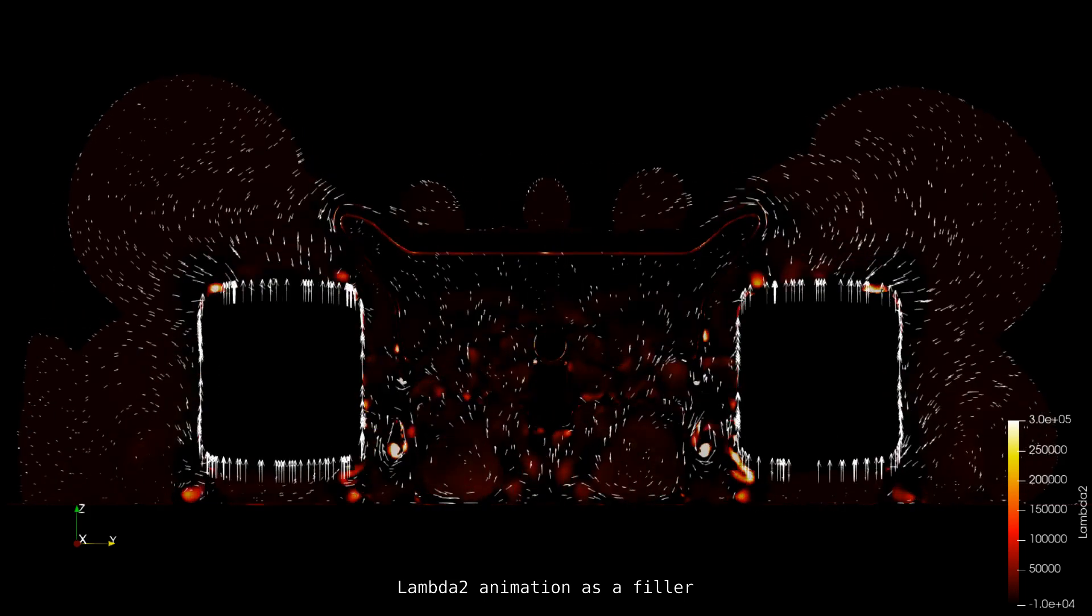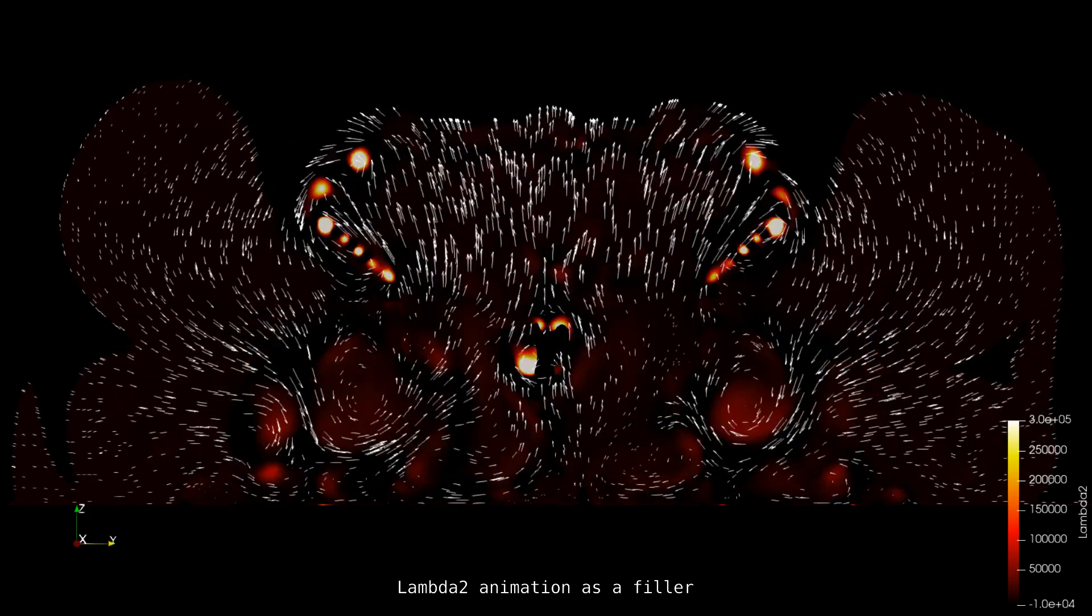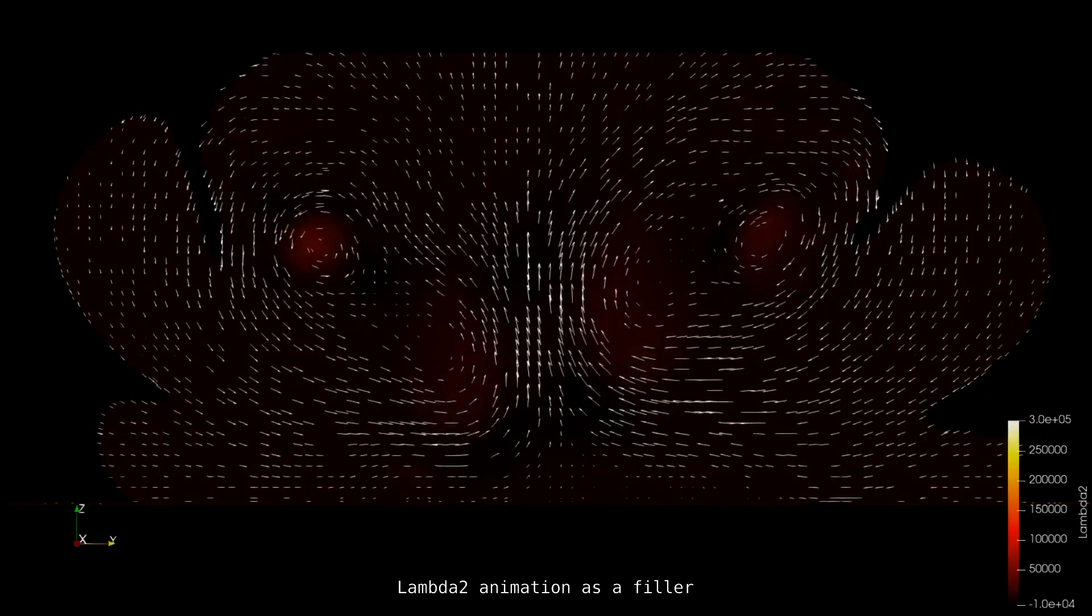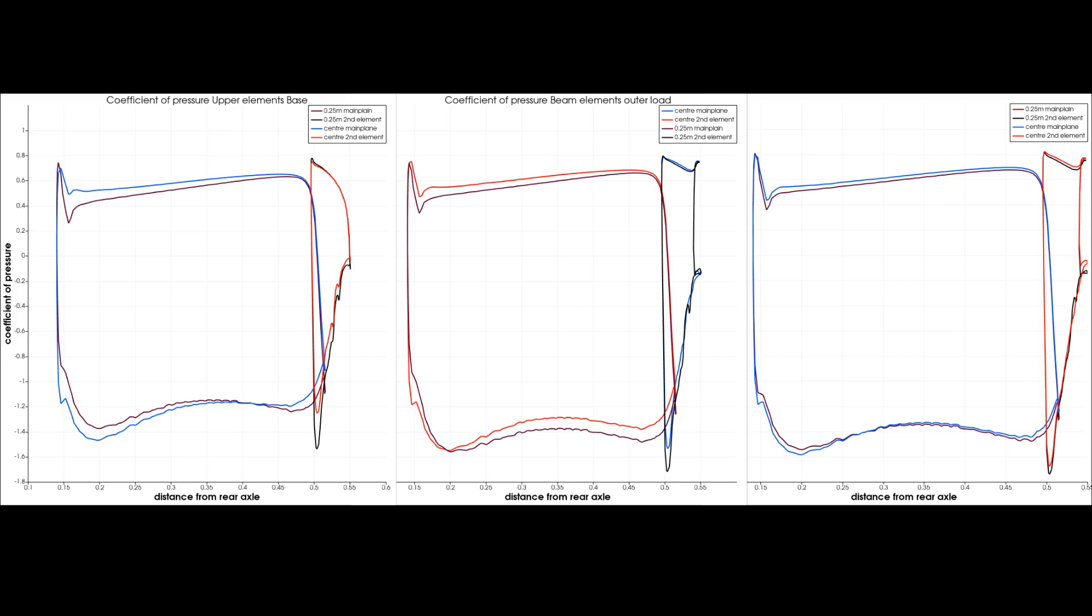That is, the gurney alone is worth 3.5%, and the other 6.5% is a combination of the front suspension and rear axle removal. The kicker that justified this extra simulation was the coefficient of pressure plots along the profile of the rear wing's main and second element.